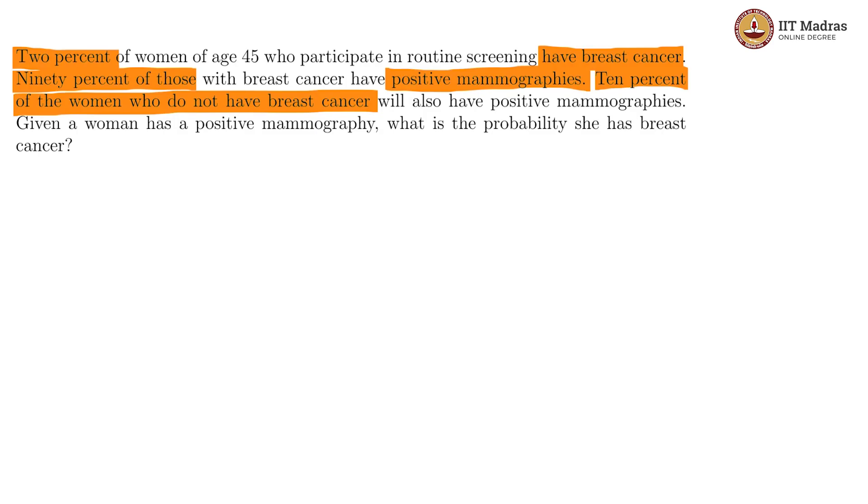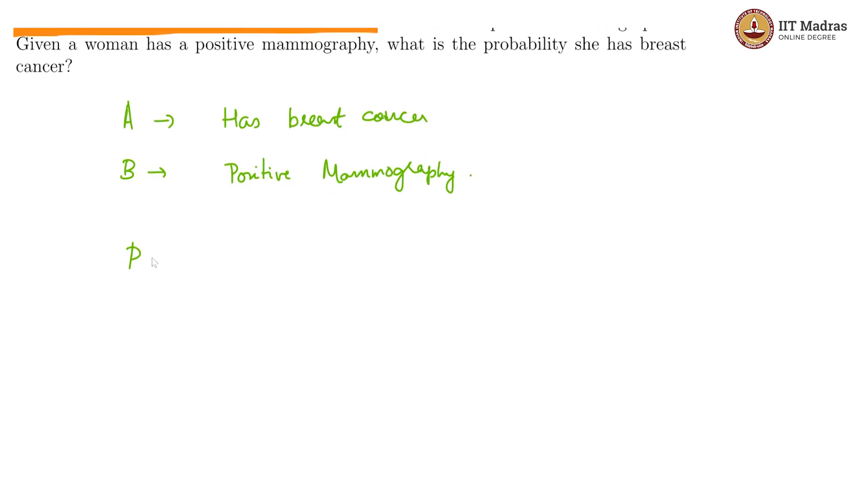We are doing conditional probability here, where one event is that the woman has breast cancer and the other event is that the mammography is positive. What we are looking for is P of A given B, which is P of A intersection B divided by P of B. P of B is affected by both people having breast cancer and not having breast cancer.